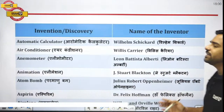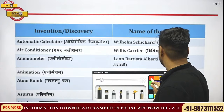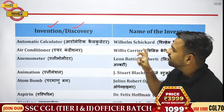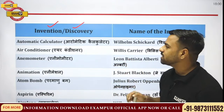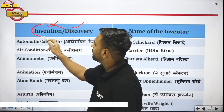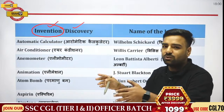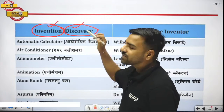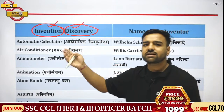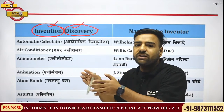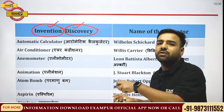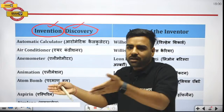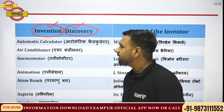First of all, if I talk about inventions and discoveries, we are always in a situation of dilemma. Is there any difference between invention and discovery? If I talk about invention, it means something was actually brought into existence through experiments which was not previously present. But if I talk about discoveries, they were actually always there — a person came to know about their existence, studied them, and brought that knowledge to other people.